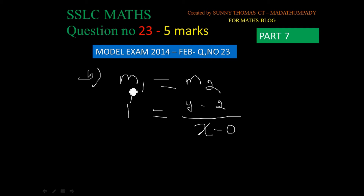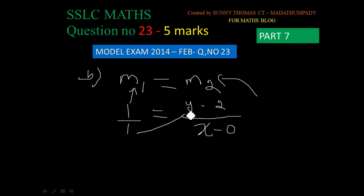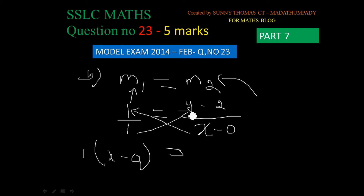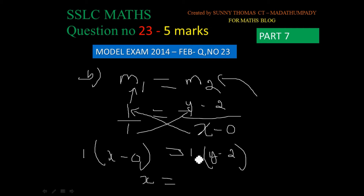This is m equals 1. We cross multiply. 1 into y minus 2 equals 1 into x minus 0. So y minus 2 equals x, which means y equals x plus 2. That is the equation of the line.